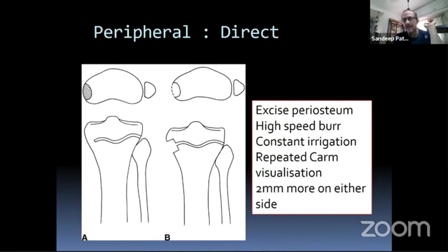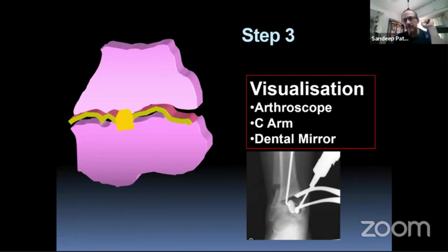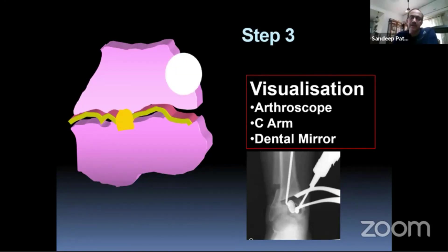Remember to excise the periosteum, use a high-speed burr with constant irrigation, and always remove more than required — go two millimeters extra on either side — so a repeat bar doesn't happen. When you excise the bar, you must have adequate visualization: the rim of your excision should show healthy physeal cartilage. To see this clearly you can use dental mirrors or an arthroscope. A 30-degree scope inserted into the metaphyseal window allows you to look all around for clean white shiny cartilage, confirming adequate resection.